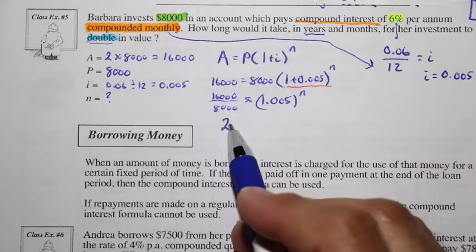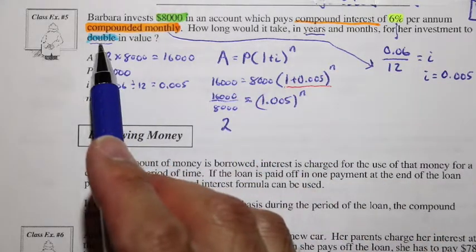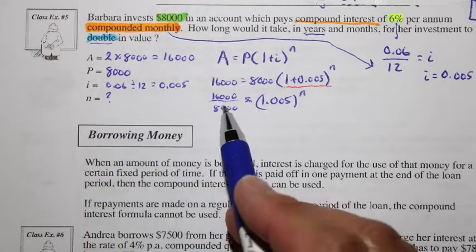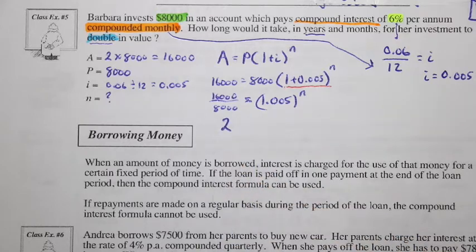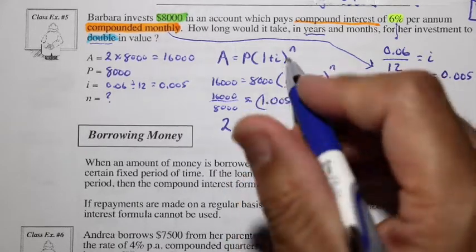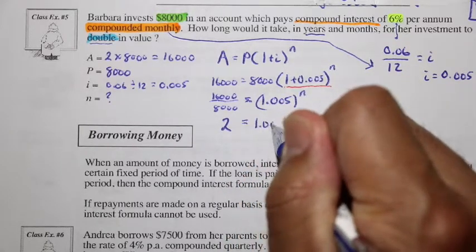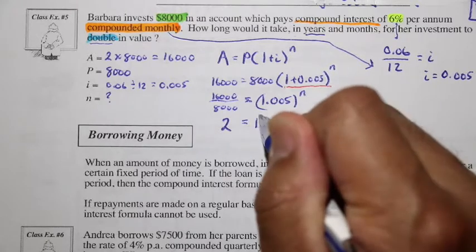What's very interesting, this 2 is very much related to this double. And you can see it looks like this amount is a ratio of the final compared to the initial. So this is 2, and this is 1.005 to the exponent n.